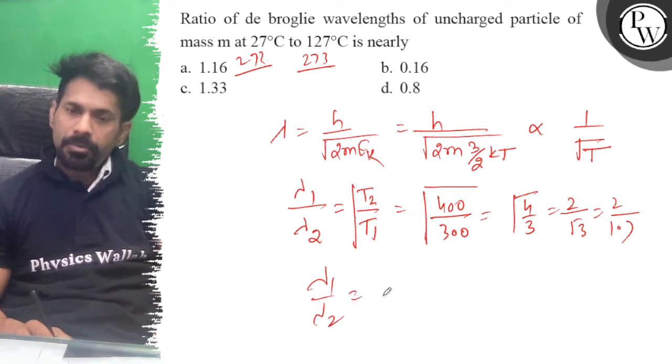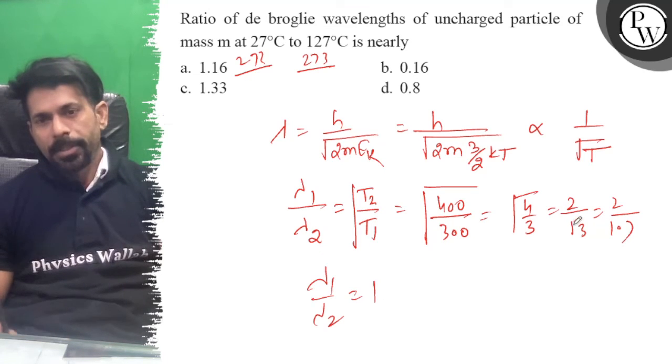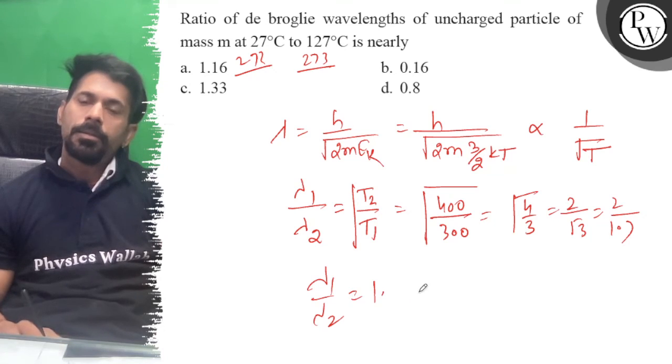Lambda 1 upon lambda 2 is equal to 1 point something. So calculating, we get 1.16.